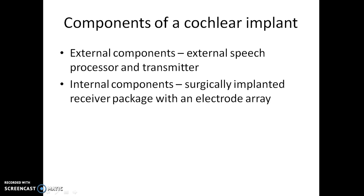What are the components of a cochlear implant? The components of a cochlear implant can be divided into two types: external components and internal components. The external components are an external speech processor and a transmitter. The internal components are a surgically implanted receiver package with an electrode array. Basically the external components are outside the body and the internal components are inside our body.